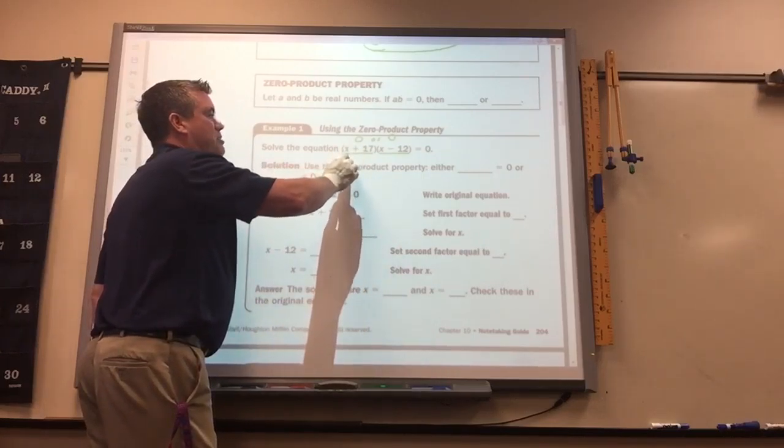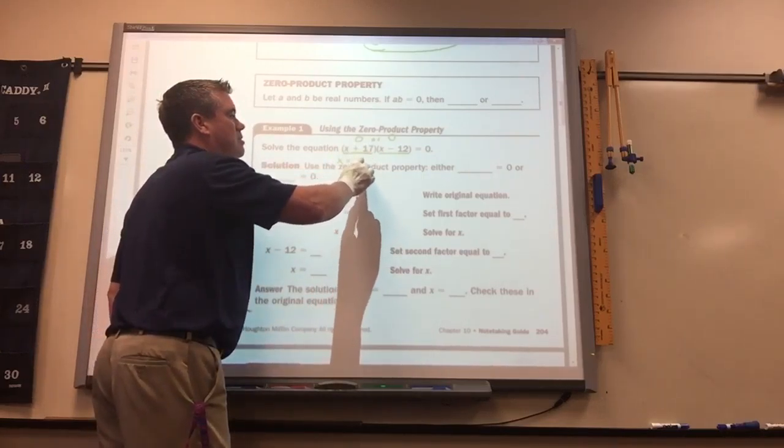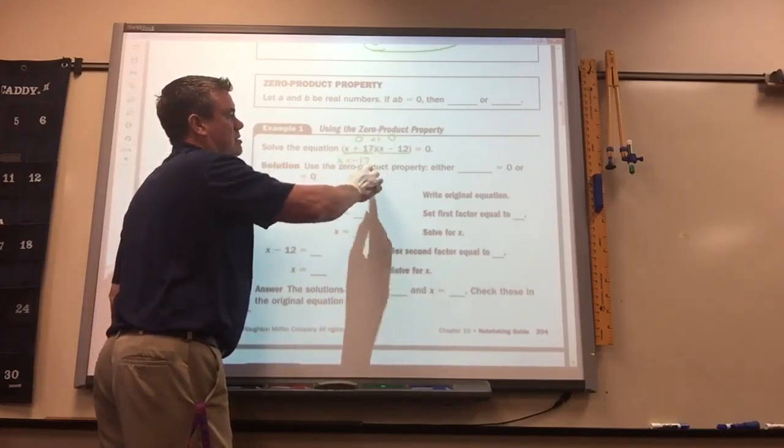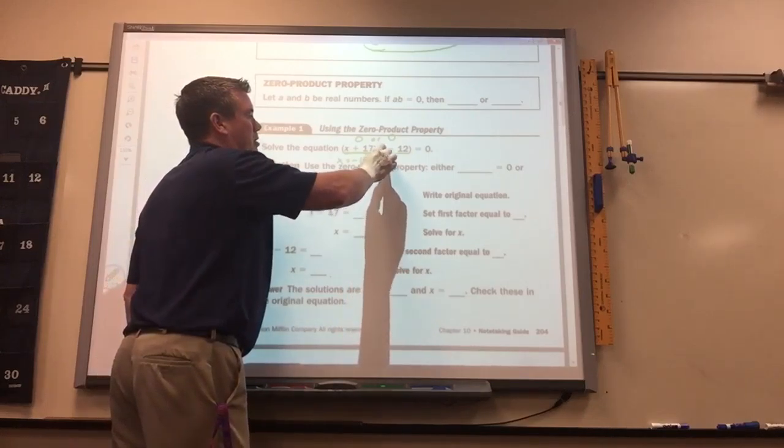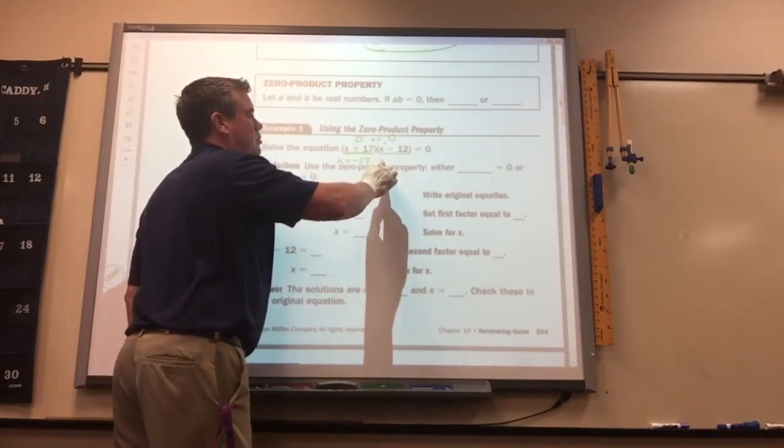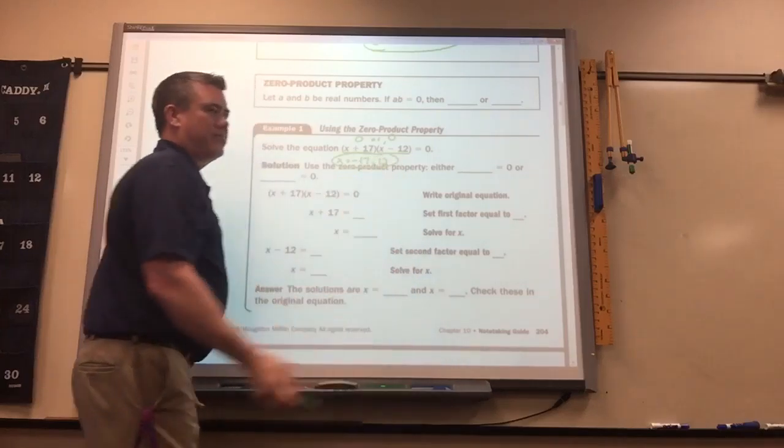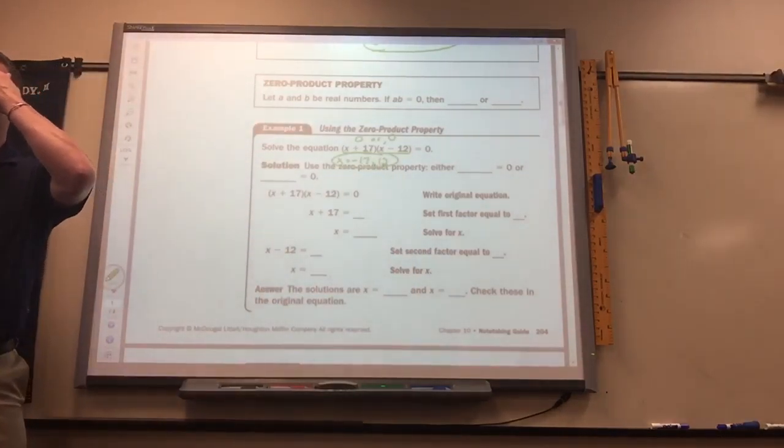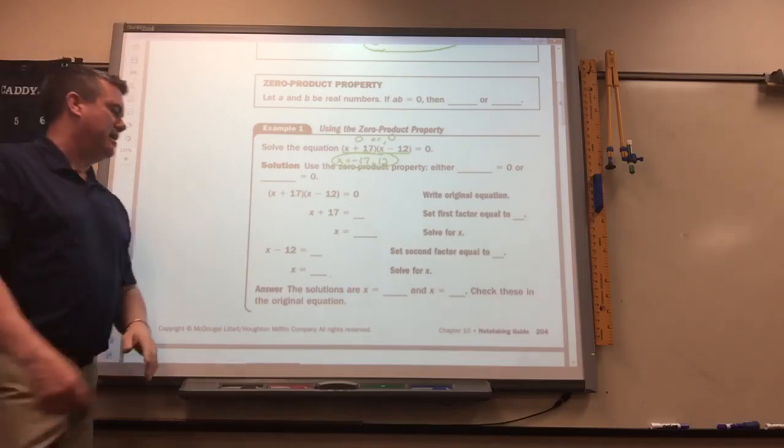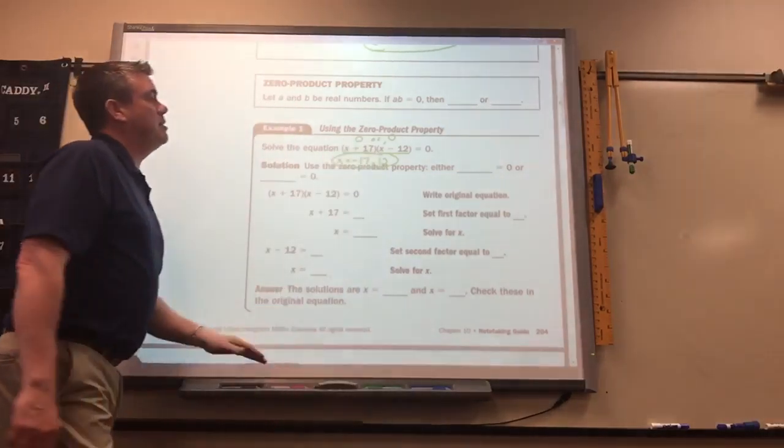So, what would you plug in for x to make this zero? Negative 9.7. 17. And then, what would you plug in here? 12. Okay? So, they're just, again, these are real easy problems. It's just getting you used to the idea of how to spot the solution.